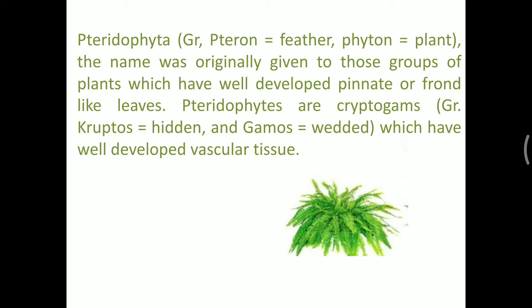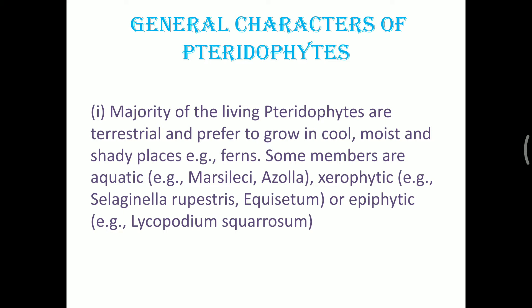Pteridophytes are the first plants to have a vascular system, though it is not very well developed compared to bryophytes and algae. Some general characteristics include: they grow in moist, damp, cool, and shady places. Some members are aquatic like Marsileaceae and Azolla. Xerophytic species are present like Selaginella rupestris and Equisetum, and epiphytic plants include Lycopodium and Pteridium.